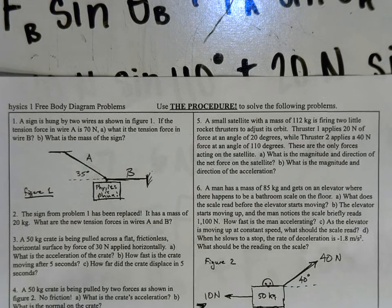110 degrees. You have to assume some kind of axis system for this. These are the only forces acting on the satellite. What is the magnitude and direction of the net force on the satellite? And what is the magnitude and direction of the acceleration?